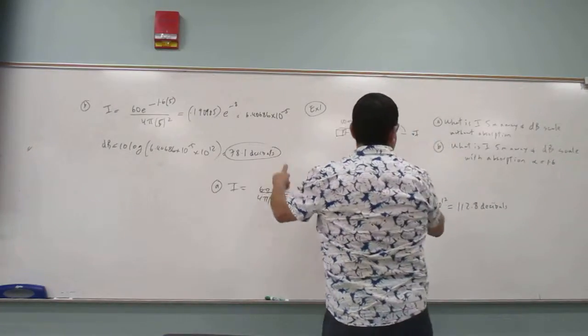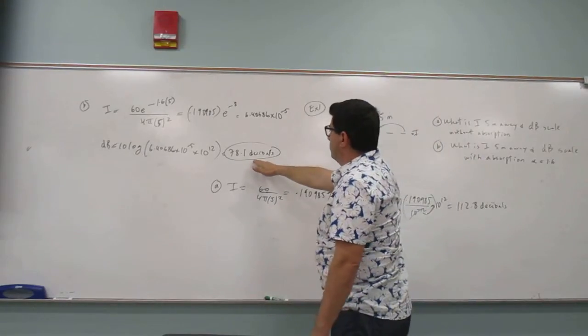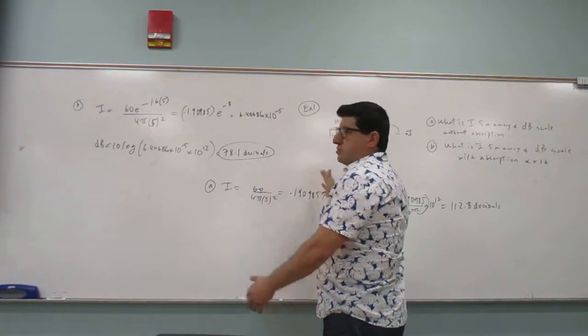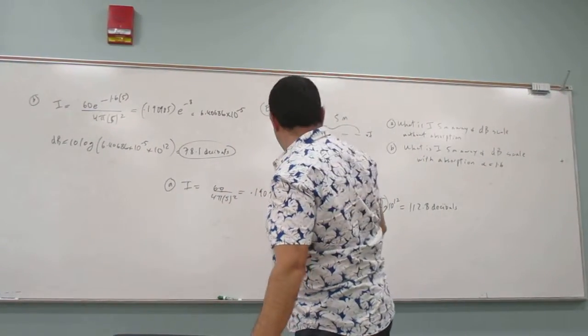So, it's probably somewhere between 112 is probably too loud. 78 seems like it's a little bit too soft. So, the realistic alpha is probably somewhere in between. You see?